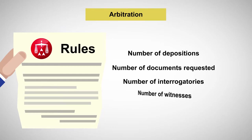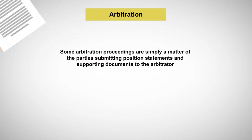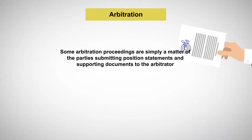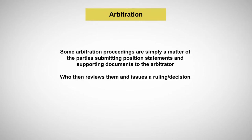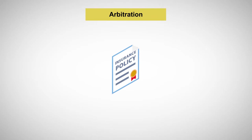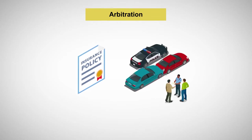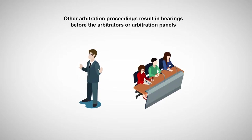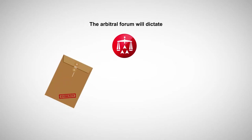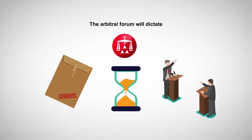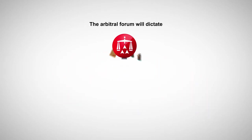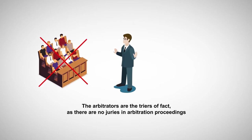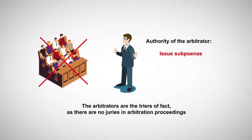The arbitral forum can also specify the number of witnesses who can testify at the hearing. Some arbitration proceedings are simply a matter of the parties submitting position statements and supporting documents to the arbitrator, who then reviews them and issues a ruling. This is common in disputes between insurance companies determining which of their insureds caused a wreck. Other arbitration proceedings result in hearings before arbitrators or arbitration panels. The procedures established by the arbitral forum will dictate what is permitted into evidence, how long the hearing can last, and whether the parties will be permitted to make opening statements or closing arguments. The arbitrators are the triers of fact, as there are no juries in arbitration proceedings. The arbitrator's authority to issue subpoenas to require people to attend the hearing or compel third parties to produce documents is also quite limited.